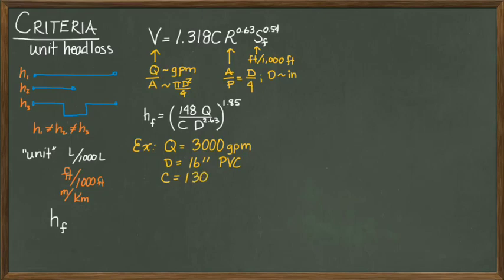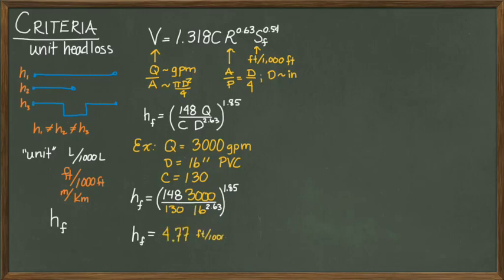Calculate the unit head loss by inserting the given information into the modified Hazen-Williams equation and we calculate the answer to be 4.77 feet per 1,000 feet. This modified form of the Hazen-Williams is especially helpful when sizing pipelines based upon a given head loss criteria.